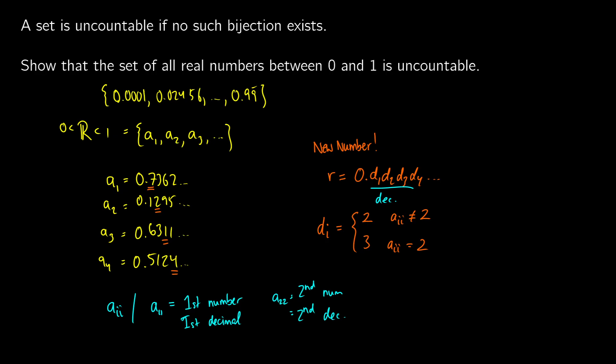Now what we're going to get in this case is a brand new number. We're going to get r is equal to 0, and in this case, because the first place is 7, we change it to 2. In the second position, it's 2, so we change it to 3. In a3, it'd be 1, so we change it to 2. In a4, it would be 4, so we change it to 2. And this continues on and on and on.